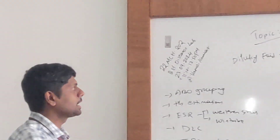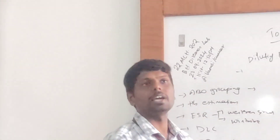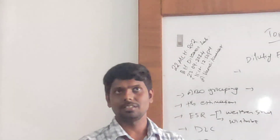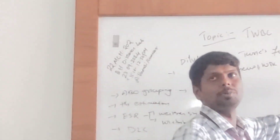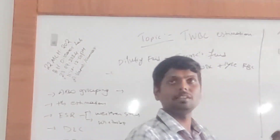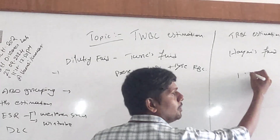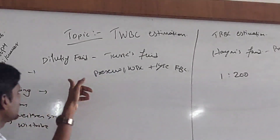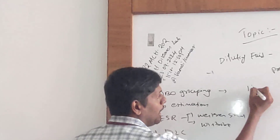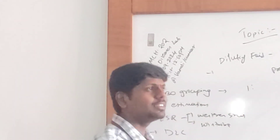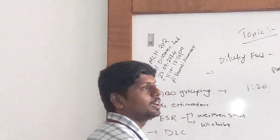This is one important differentiation. Next: dilution factor. What is the dilution factor for WBC and RBC? RBC dilution factor is 1:200. WBC dilution factor is 1:20. Very good.